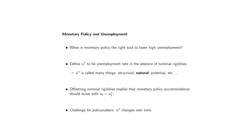U* is called many things in popular discourse — sometimes referred to as structural, sometimes as potential. I'm going to use the term 'natural rate of unemployment' to refer to this rate that exists in the artificial world without any nominal rigidities. Offsetting nominal rigidities means that monetary policy accommodation should move with the gap between the observed unemployment rate U — the unemployment rate we see in the data — and U*, the natural rate of unemployment.